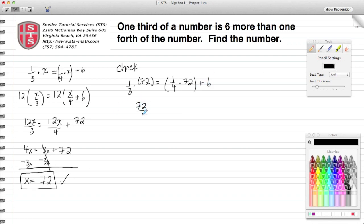3 goes into 72 24 times. And then here, I see that 4 goes into 72... 4 goes into 72 18 times. Then I write my 18 plus 6. Now I evaluate on my right-hand side. 18 plus 6 is in fact 24, so I see that my calculations are correct, that the unknown value is 72.